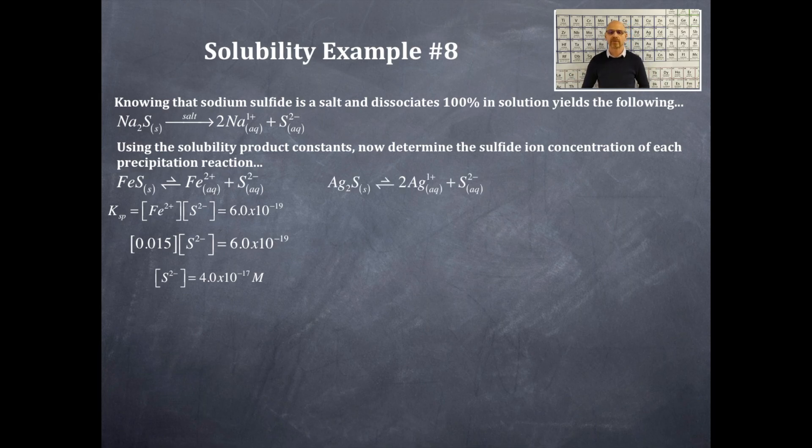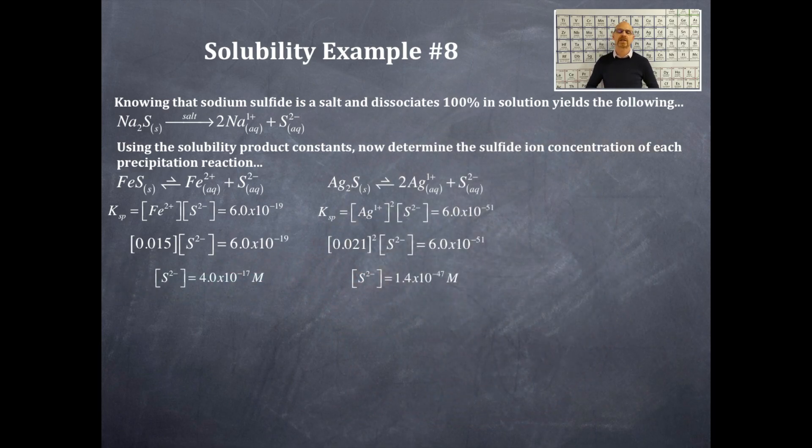Now, what I'm going to do is I'm going to do the same thing here for the silver sulfide. The silver sulfide is, silver is a 1+ charge, sulfide is that same 2- charge that we had before. So, the formula for silver sulfide is Ag2S, and that is going to yield on the product side 2 silver ions and 1 sulfide ion. Now, that gives me a KSP of 6.0 times 10 to the negative 51, but this KSP equation is silver ion concentration squared times the sulfide ion concentration. So, I'm going to plug in my silver ion concentration, that's 0.021 squared, and solve for the sulfide ion concentration, which would be right here at 1.4 times 10 to the negative 47 molar.